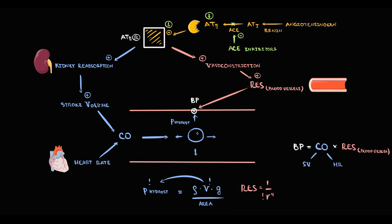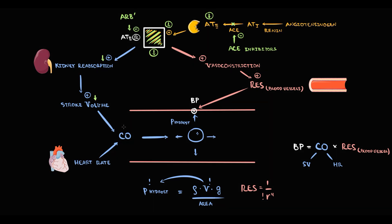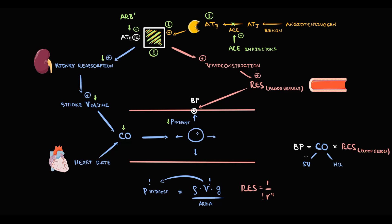With decreasing activation of the angiotensin 2 receptor, fluid reabsorption by the kidneys decreases, causing decreased stroke volume and thereby decreased cardiac output, which reduces the hydrostatic pressure acting on the blood vessel wall. In addition, decreased angiotensin 2 receptor activation causes reduced vasoconstriction, so vessels become more dilated. With increasing vessel radius, blood vessel resistance decreases, and the lower the resistance, the lower the blood pressure.